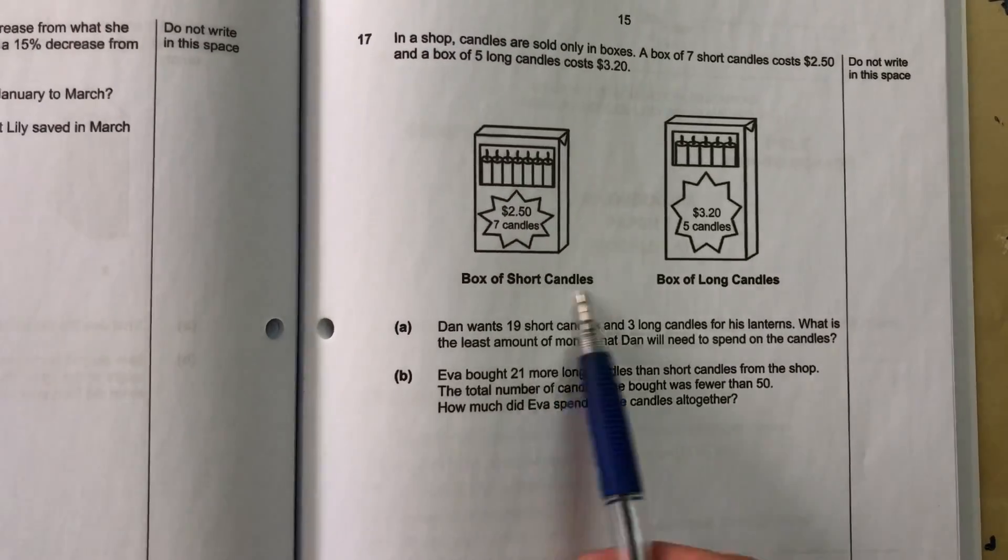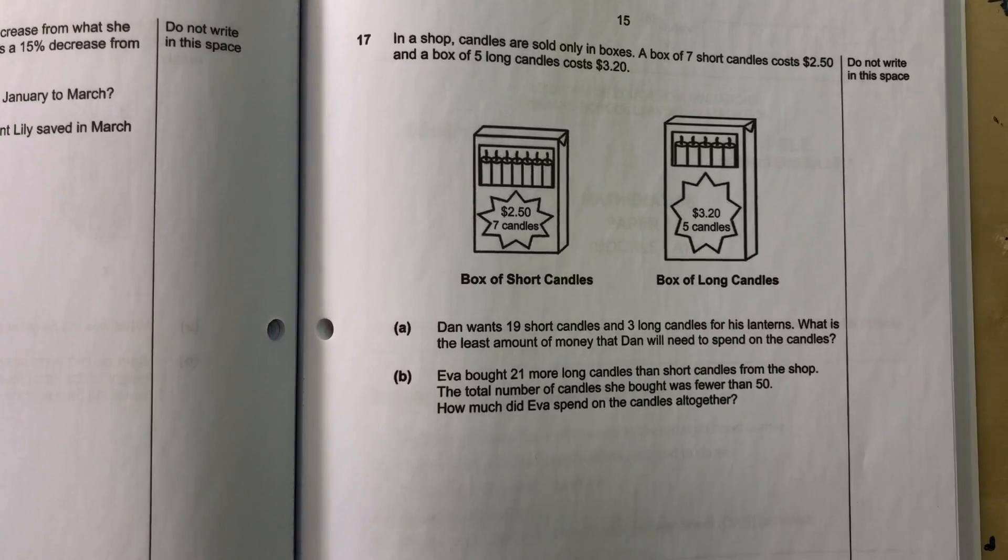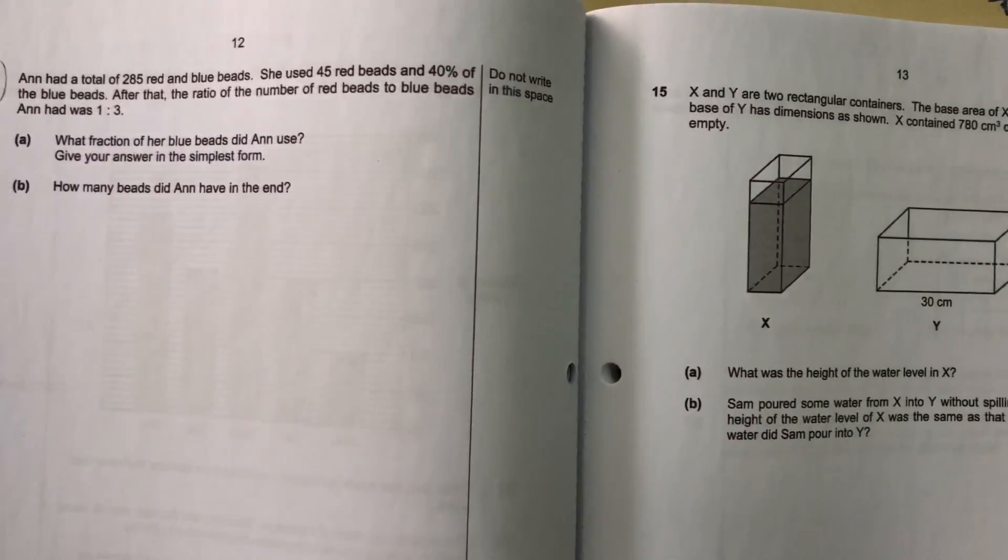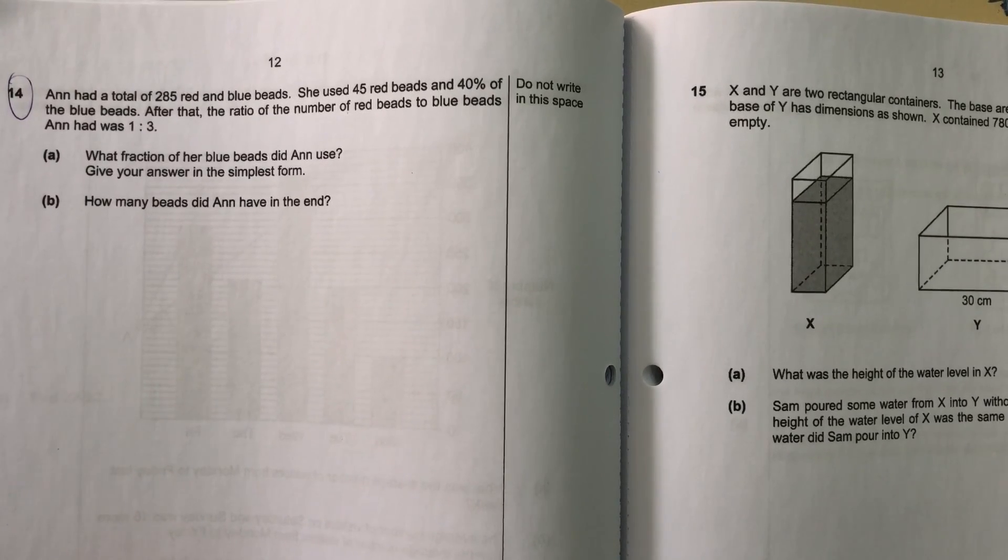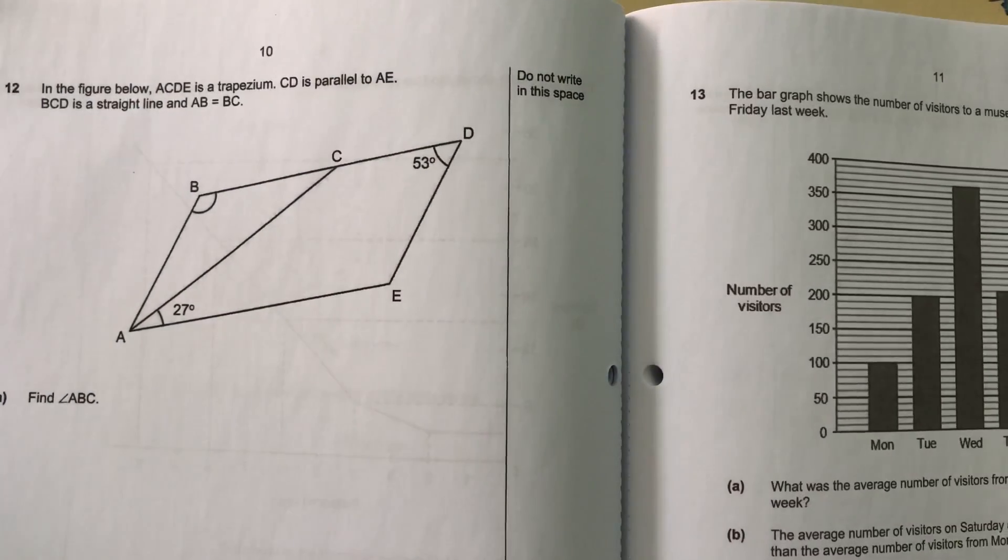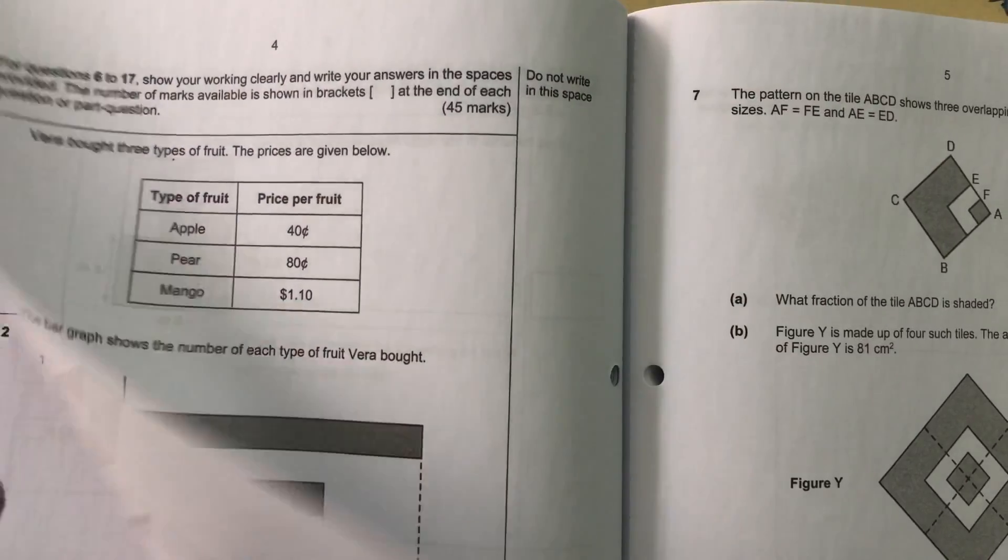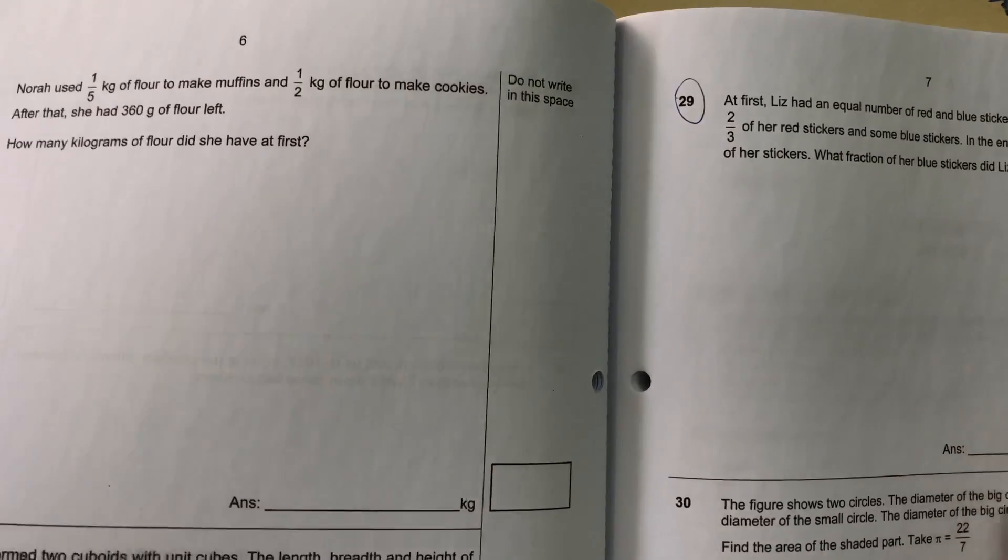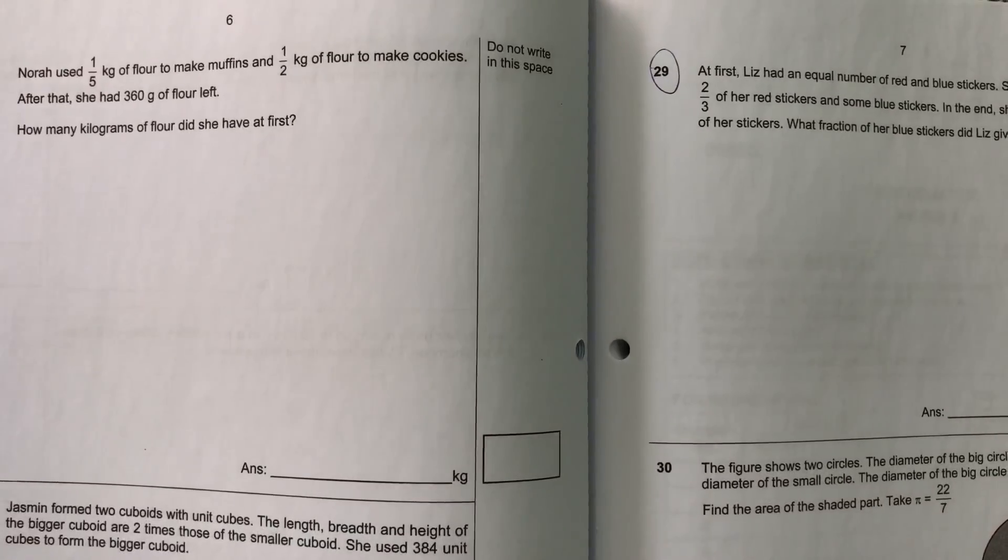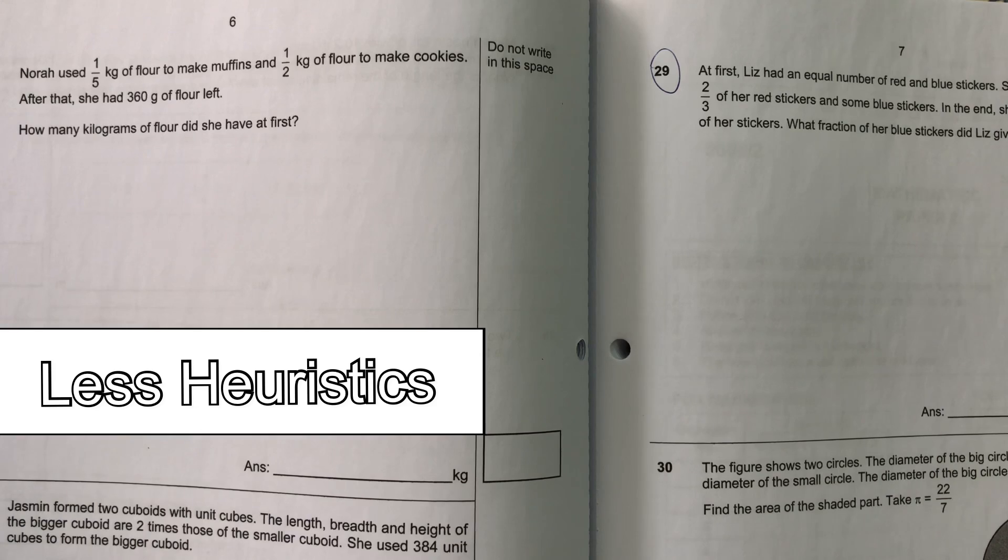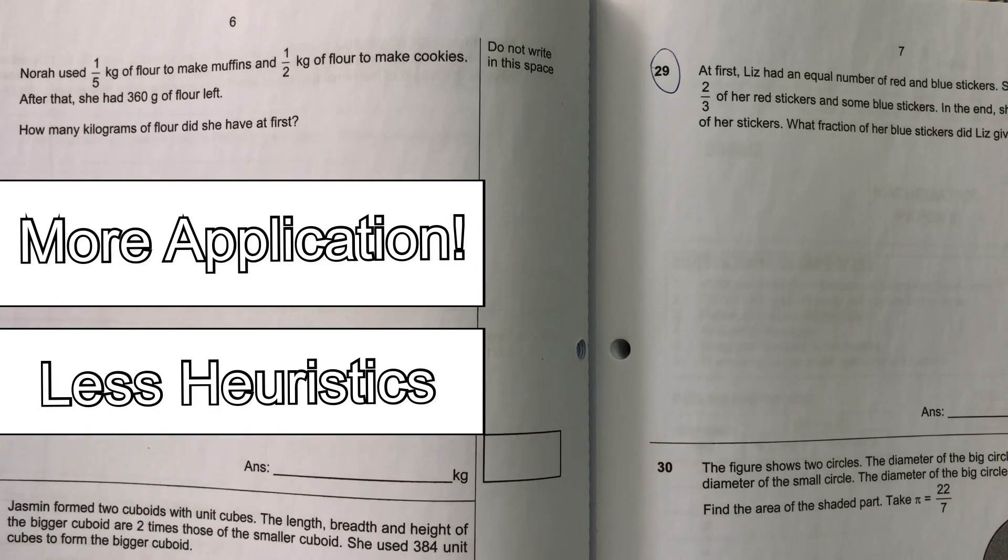I'm going to make another video to show you how this can be done. But, there's no particular heuristics involved in that particular question. So, just to keep track, summarize what we have seen. We have seen before and after total unchanged. We have seen the before and after units and parts, the most difficult one. Just about two types of before and after heuristics. And then, we have equal concept as well as remainder concept. All in all, I think they account for about less than 20 marks. So, heuristics are now less than 20 marks. And in fact, the bigger portion of it is application.